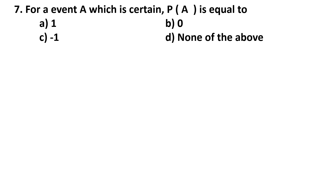Question number 7. For an event A which is certain, probability of A is equal to: 1, 0, minus 1, or none of the above.